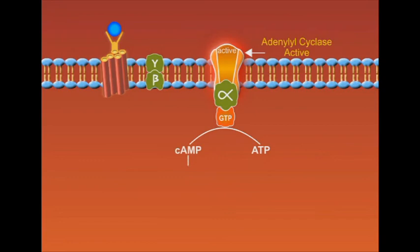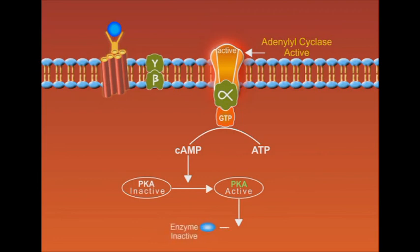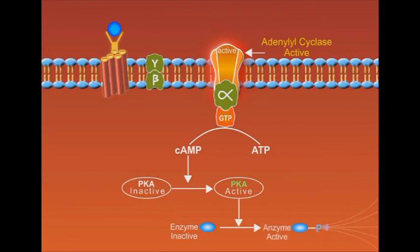In turn, cyclic AMP converts the inactive protein kinase A, abbreviated as PKA, into its active form. The active PKA phosphorylates and activates large numbers of cellular enzymes that induce cascades of biological effects.